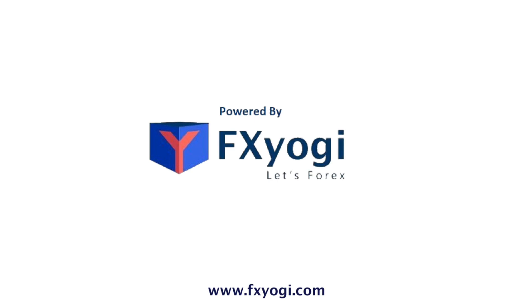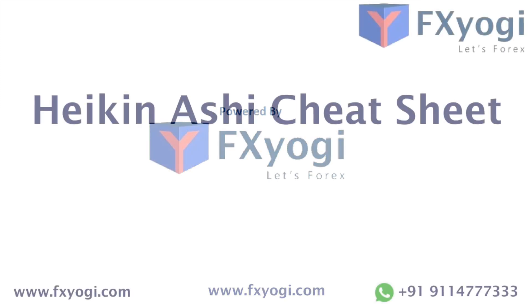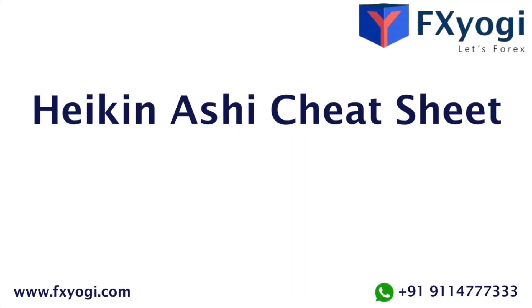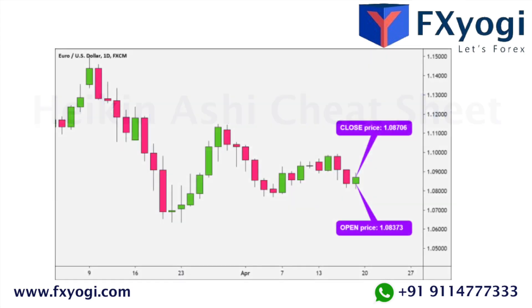Hey friends, welcome to FX Yogi. In today's video, let's learn about the Heiken Ashi cheat sheet. Heiken Ashi is a type of price chart that consists of modified Japanese candlesticks. The Heiken Ashi chart filters market noise and provides a clearer visual representation of the trend.